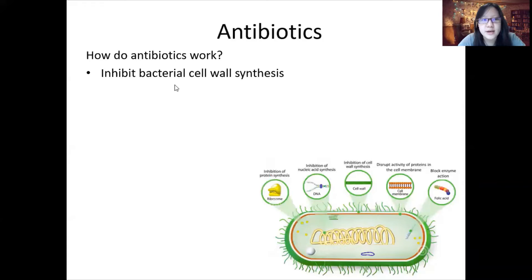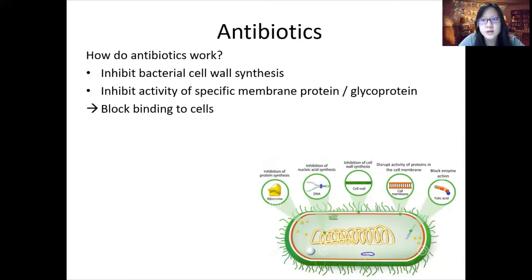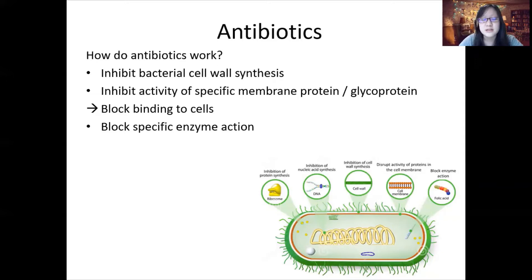We can inhibit cell wall synthesis — bacteria has a cell wall but we don't, so inhibiting it slows growth or kills the bacteria. We can inhibit activity of a specific membrane protein or glycoprotein that bacteria has but we don't, blocking entry into our cells and blocking the action of bacteria. We can also block specific enzyme actions that are specific to bacteria and not to us.